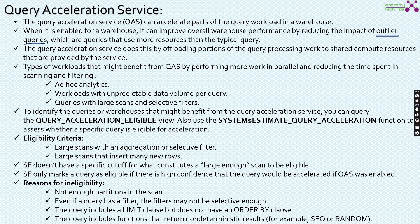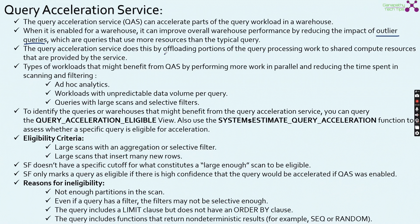Simply put, QAS identifies and optimizes outlier queries — the queries that utilize more resources. The query acceleration service does this by offloading portions of query processing work to shared compute resources provided by the service. It identifies the parts of a query that can consume more credits or resources, then executes them in parallel with shared compute resources.